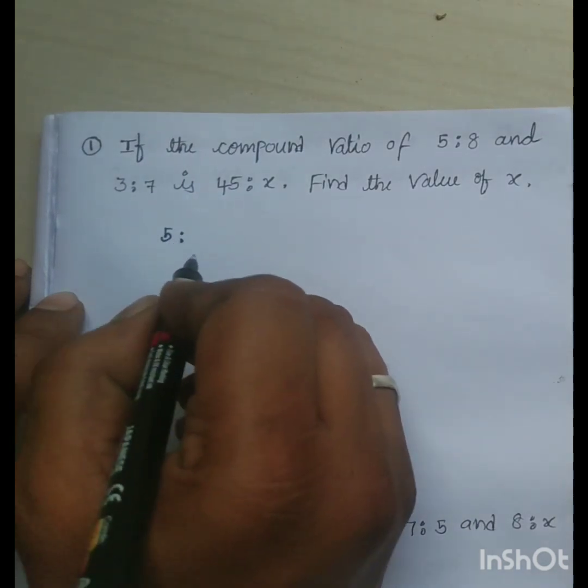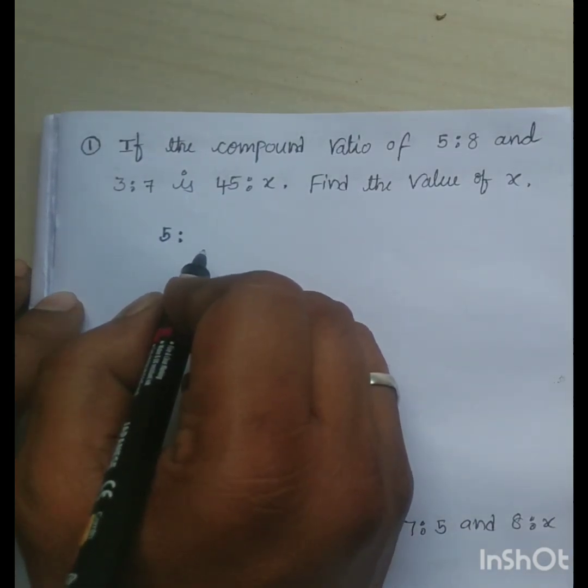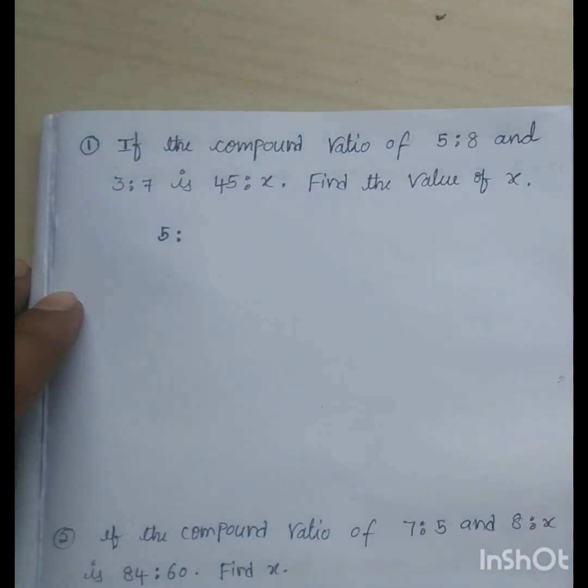If two ratios are expressed in the form of single ratio, as the ratio of product of antecedents to product of consequent, we call it as compound ratio.